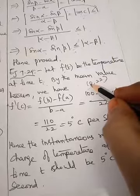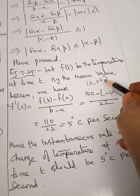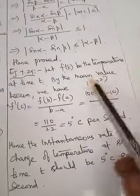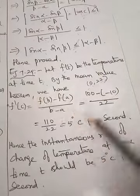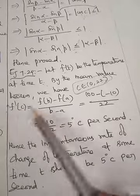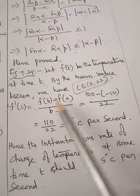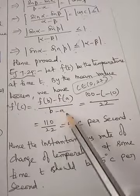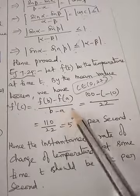By the Mean Value Theorem, there exists one c belonging to (0,22) such that f'(c) equals f(b) minus f(a) divided by b minus a. f(b) is f(22).